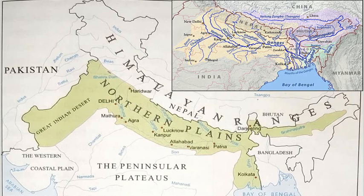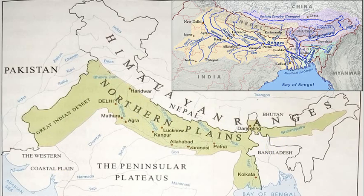Here is the map of the Northern Plains. As you can see, the Northern Plains occupy the greater part of northern India. It lies towards the south of the northern mountains and is also known as the Ganga-Brahmaputra Plain.